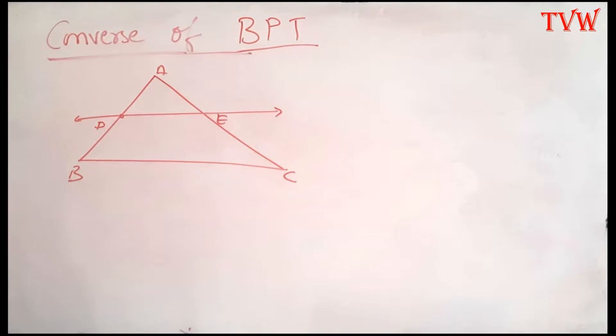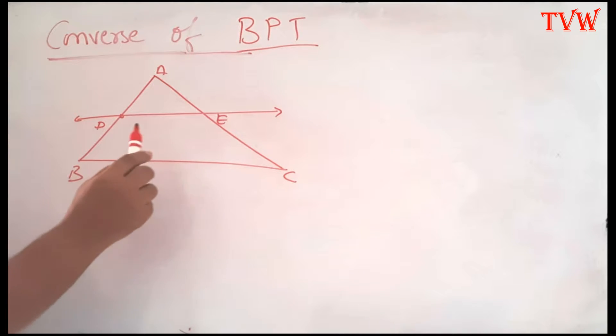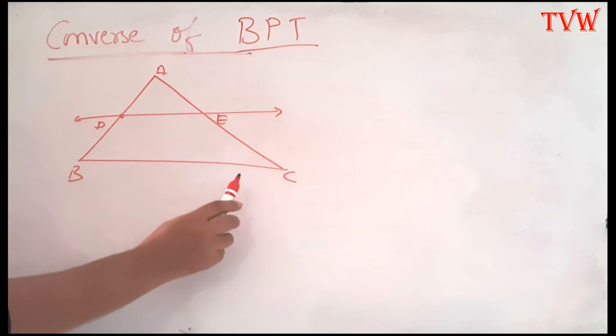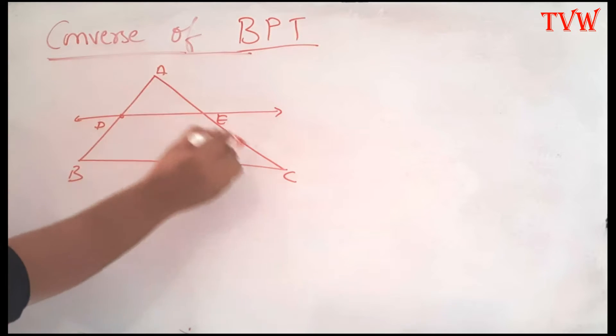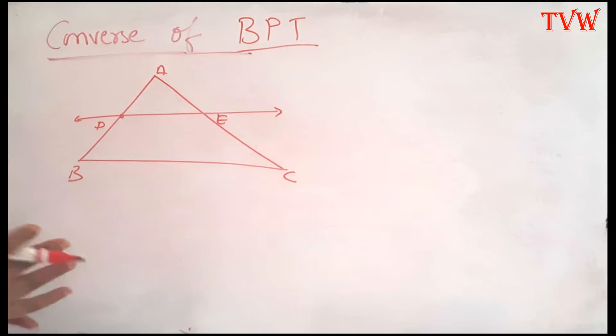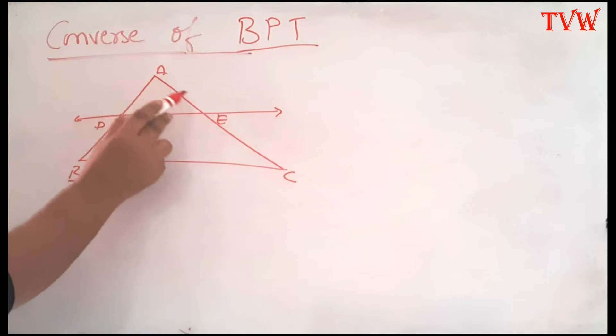Basic proportionality theorem says that if there is a line parallel to one side of a triangle that passes through the other two sides, then it divides the two sides in equal ratios. We saw that AD divided by DB has to be equal to AE divided by EC.